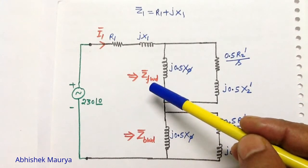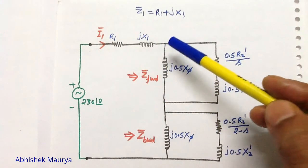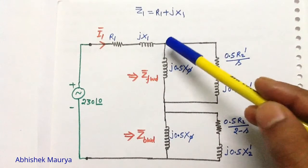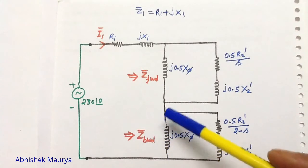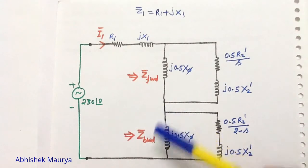First we will calculate the forward impedance, which is the equivalent impedance between these two points. Then we will calculate the backward impedance, which is the equivalent impedance between these two points.